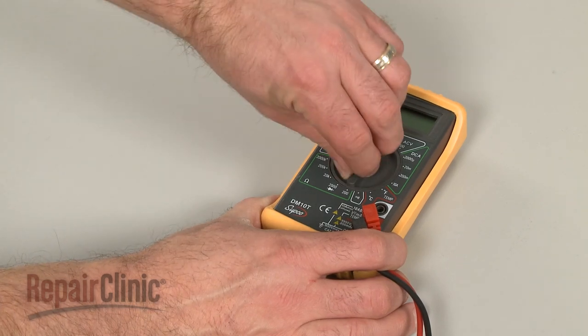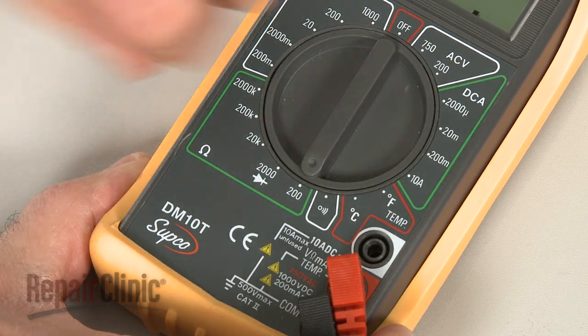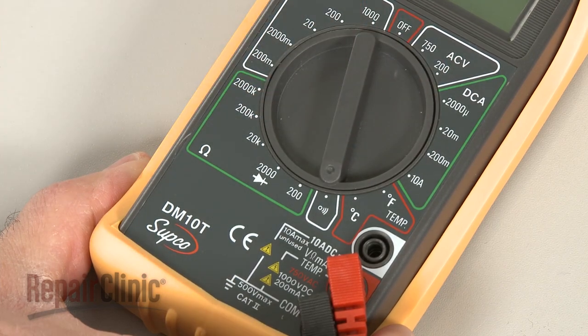When using a digital model, again rotate the dial to the lowest setting for ohms of resistance, or resistance with tone if your meter has this option.